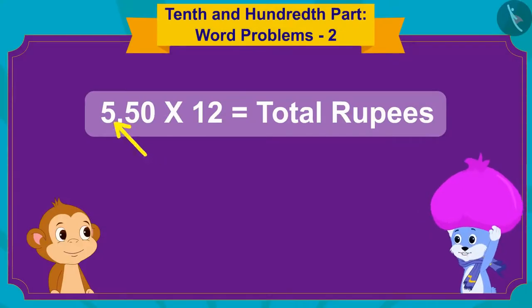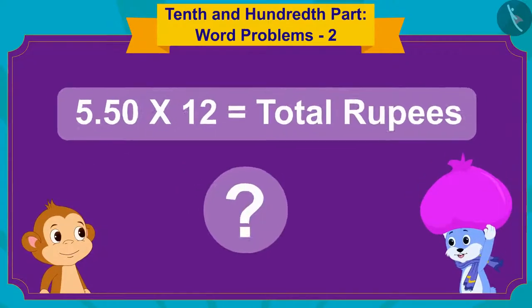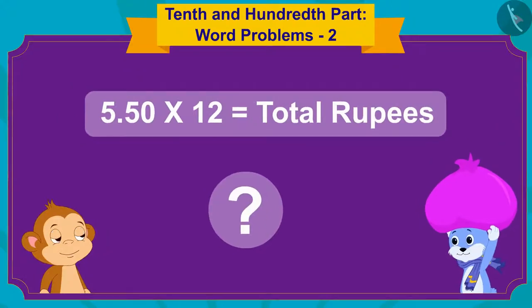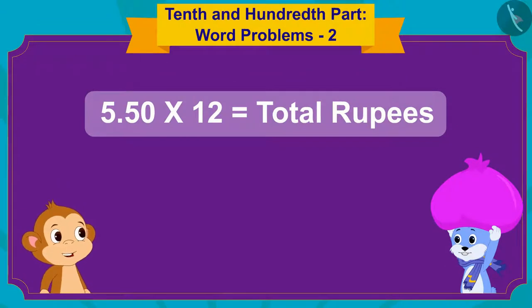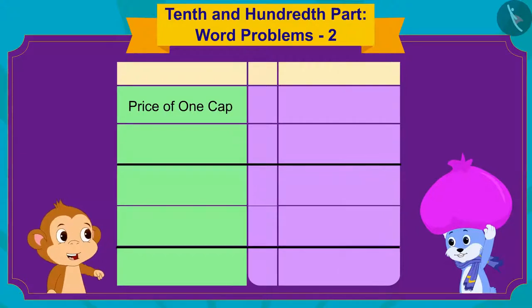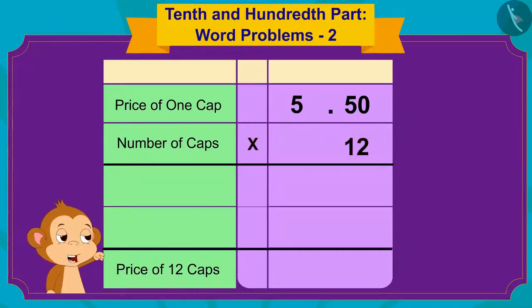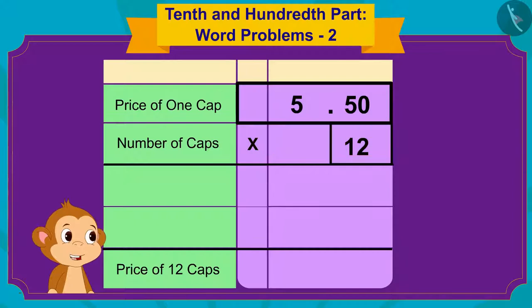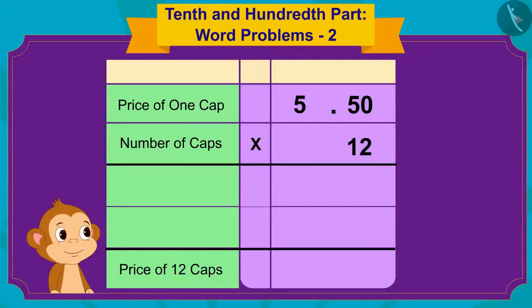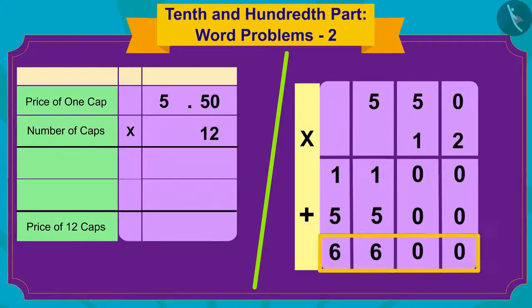Bunny said: I see, but there is also a decimal point in the middle. So, how do I do this multiplication? Bunny told Babban: I will teach you. Look, first we will write the price of one cap like this. Now, we will multiply 550 by 12 just as we do any multiplication. Saying this, Babban quickly multiplied it on a paper in this manner and wrote 6,600 as the answer.